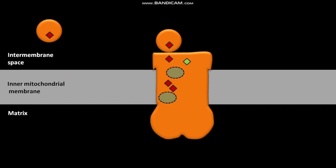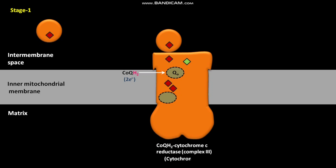The Q cycle occurs in two stages. In stage I of the Q cycle, a reduced COQH2 molecule present in the inner mitochondrial membrane binds to the QO site. The QO site is present on the intermembrane space side of the transmembrane portion of COQH2 cytochrome C reductase, or complex III, or cytochrome BC1. In the QO site, the reduced COQH2 releases two H+ ions into the intermembrane space and two electrons.